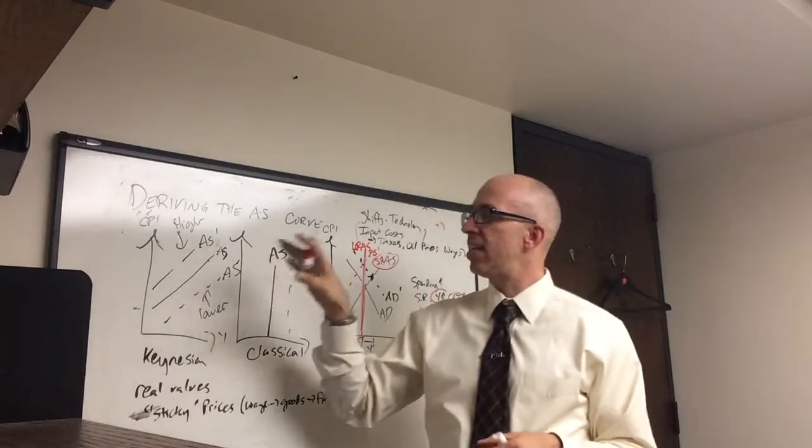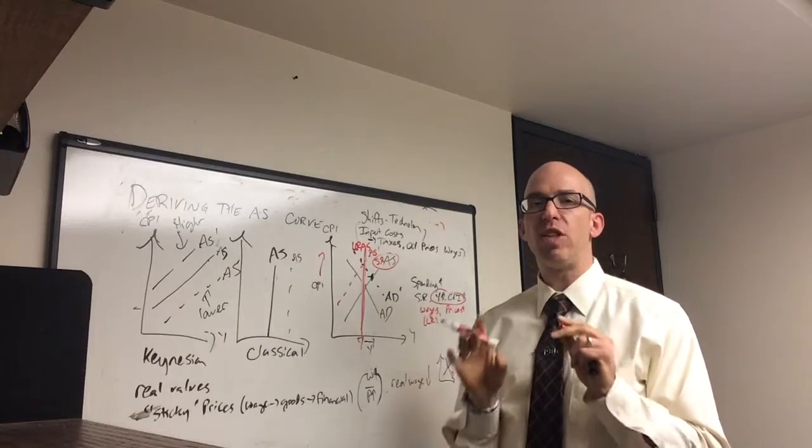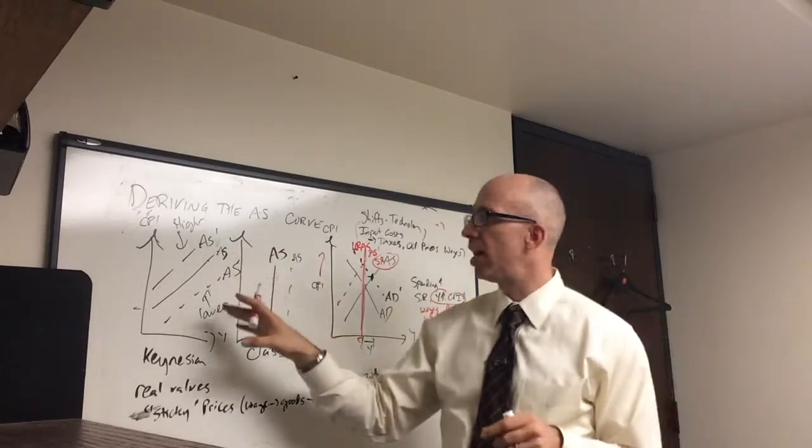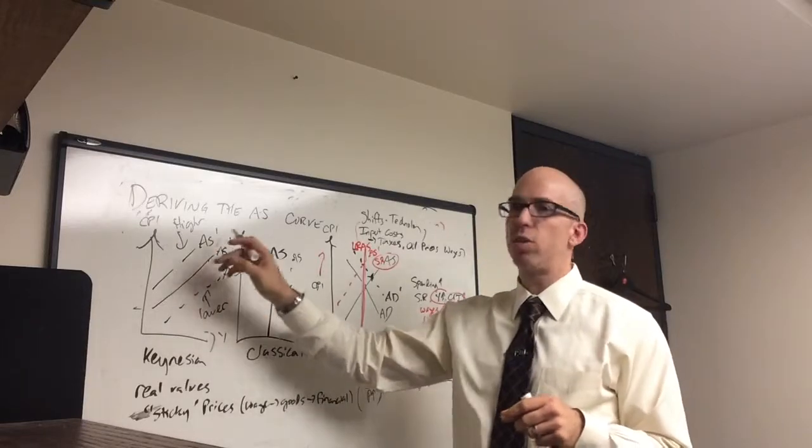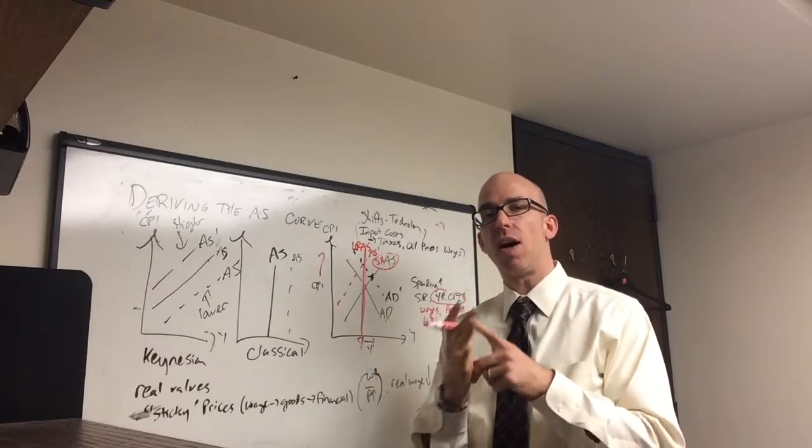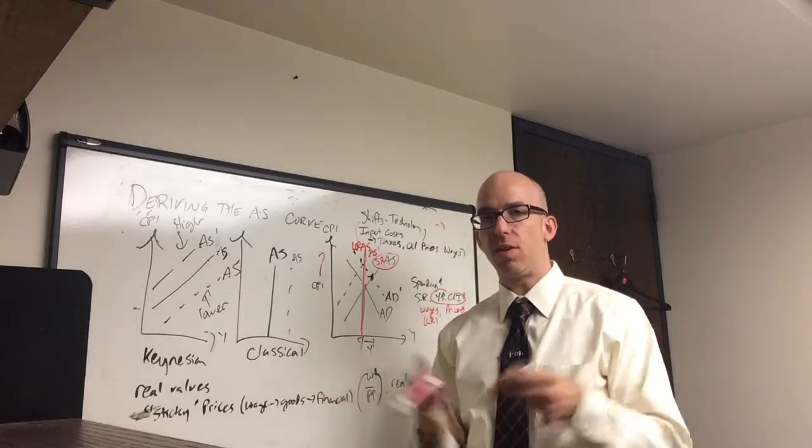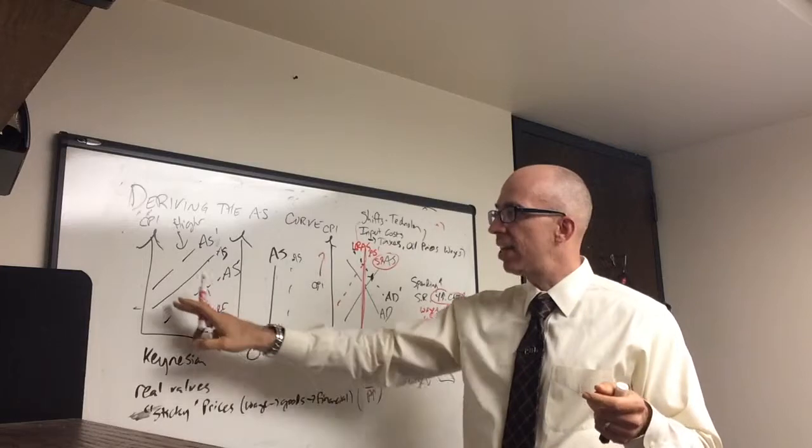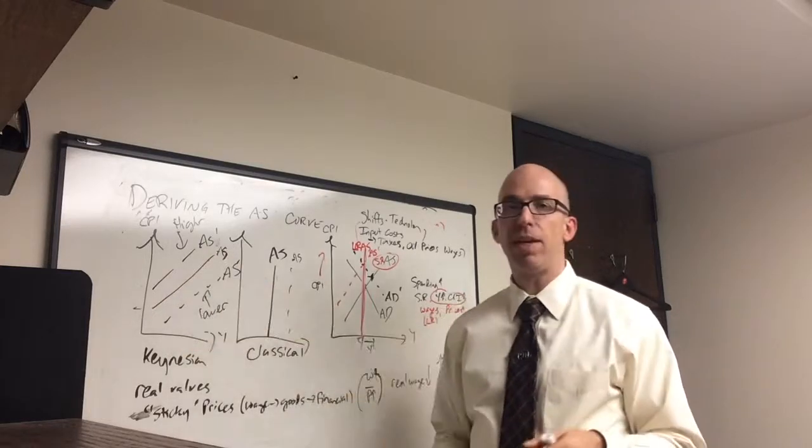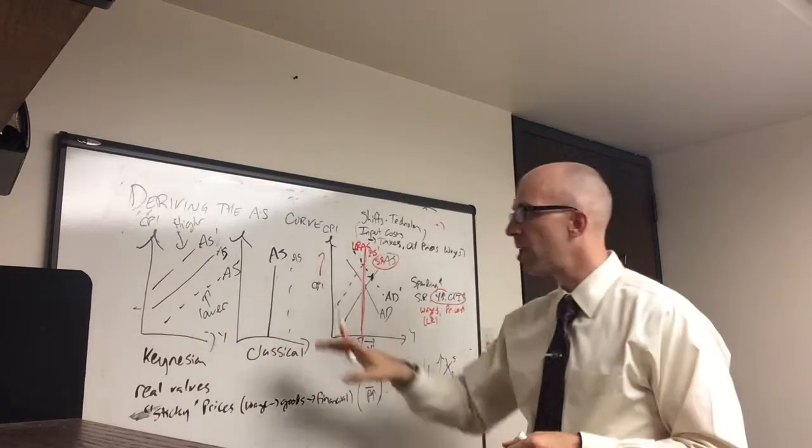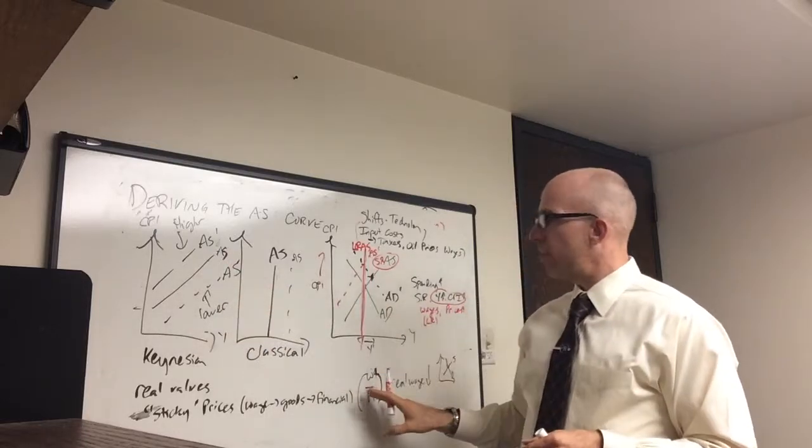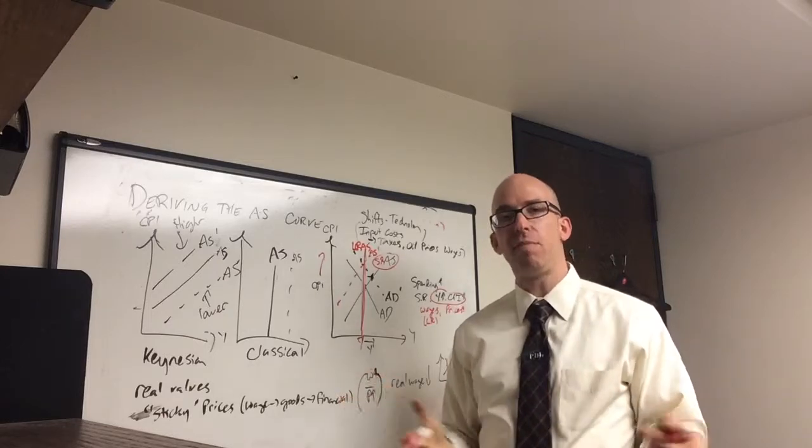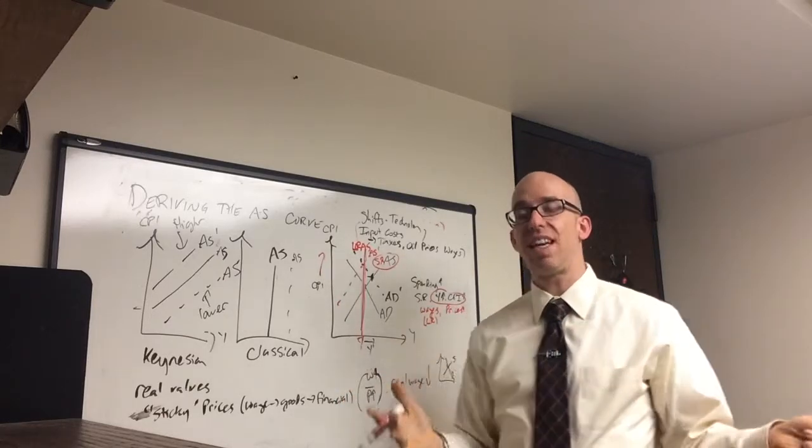So we've derived the AD curve based on equilibrium in the goods market. This is equilibrium in the labor market. And all I didn't really draw, we're assuming that high prices will lower the real wage, causing more labor to be demanded, and also affect supply. And that will raise GDP. That gives us a relationship where higher prices and higher GDP have an equilibrium point. If wages and prices adjust, you have a classical supply curve, in which case GDP is unaffected because the wage and price increases cancel out exactly.